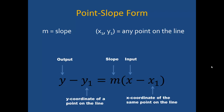m still represents slope and I use any other point on the line. This point is represented by x1, y1 in the equation: y minus y1 equals m times, in parentheses, x minus x1. m is slope, x1 is the x-coordinate of a point on the line, and y1 is the y-coordinate of the same point.